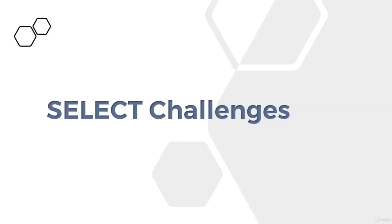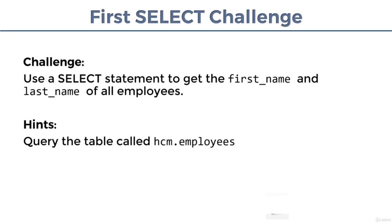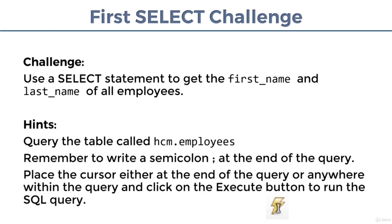Welcome back. In this lecture, you'll have a few challenges which involve writing simple SELECT statements. Hints will be given for each challenge. In the first challenge, you are to use a SELECT statement to get the first name and last name of all employees. The hint is that you'll be querying the table called hcm.employees — hcm is the database name and employees is the table name. Remember to write a semicolon at the end of every query, and click the execute button (the lightning bolt symbol) to run it.